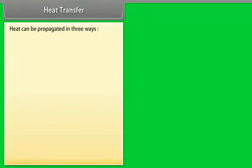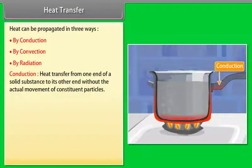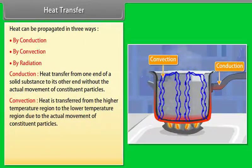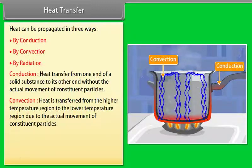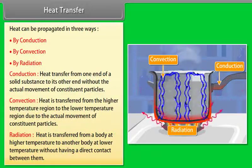Heat can be propagated in three ways: (1) By conduction — heat transfer from one end of a solid substance to its other end without the actual movement of constituent particles; (2) By convection — heat is transferred from the higher temperature region to the lower temperature region due to the actual movement of constituent particles; (3) By radiation — heat is transferred from a body at high temperature to another body at lower temperature without having direct contact between them.